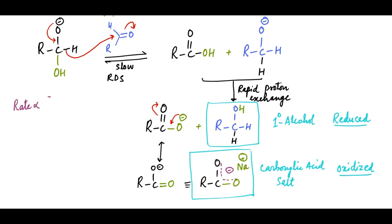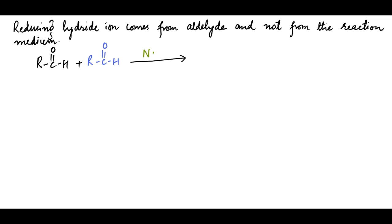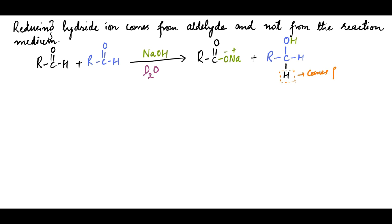The reaction rate is second order in aldehyde and first order in base — that is, the reaction follows third order kinetics. This is because the rate-determining step involves the hydroxyalkoxide, formed from base and aldehyde, and another molecule of aldehyde. That the hydride ion comes from the aldehyde and not from the reaction medium has been proved by performing the reaction in the presence of D2O. The recovered alcohol does not contain any deuterium, confirming that this hydrogen comes from the aldehyde and does not become free in solution.